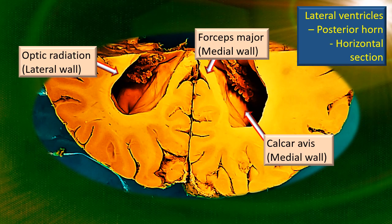Here is a horizontal section through the posterior horn. Close to the midline is the splenium, and on either side the forceps major. On the lateral wall is the optic radiation, and on the medial wall you can see a huge prominence — that prominence is the calcar avis, because of a really deep sulcus on the medial side, namely the calcarine sulcus.